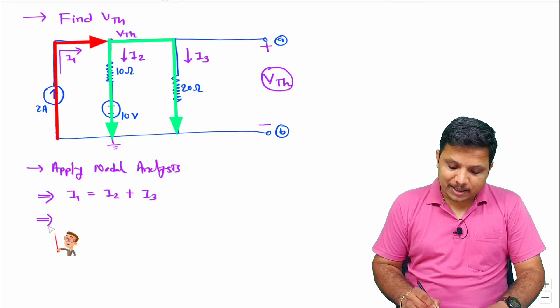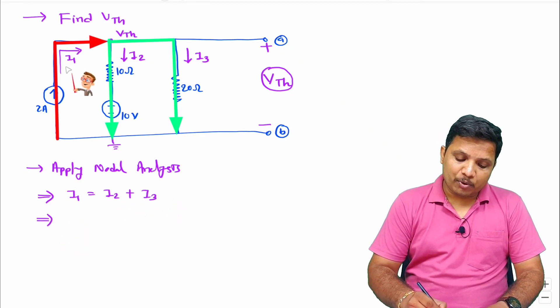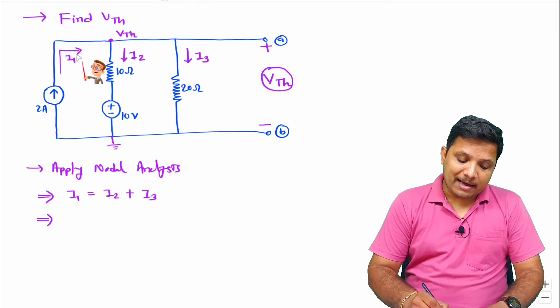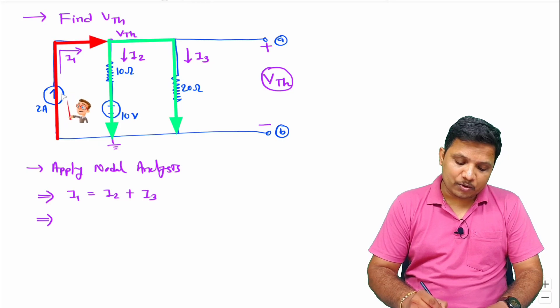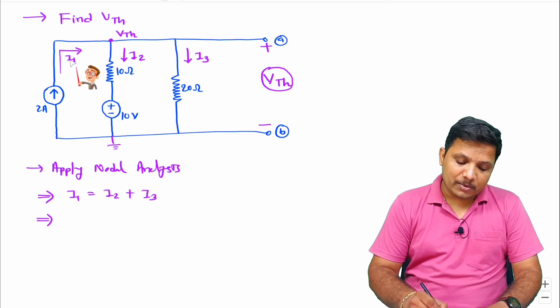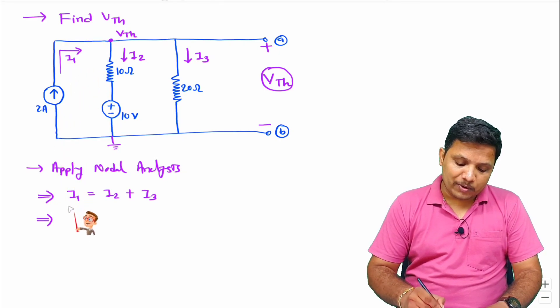Now it is very essential to provide values of I1, I2, and I3. You see I1 is happening as per this current source and direction of current source and I1 is the same. So I can say I1 equals 2 ampere.